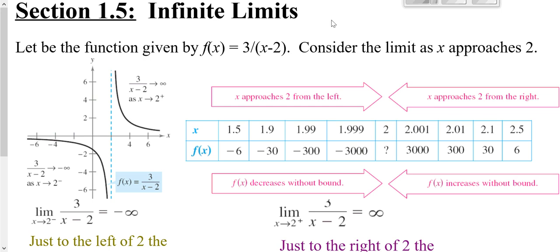We're going to look at infinite limits. Sometimes when you plug in a certain value for x, or looking at your limit as you approach that certain value, the output gets really, really big, or extremely big but negative. You can see that if you plug in 2.5 you get out 6, but plug in 2.01 you get 300. At 2.001 you're at 3,000, and just on the other side you're at negative 3,000. As you get closer and closer to 2, these values start to skyrocket in both directions without bound.